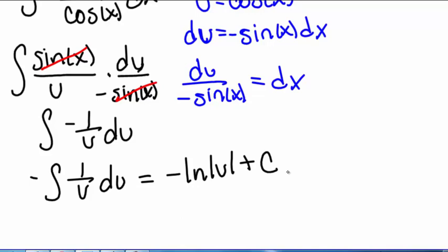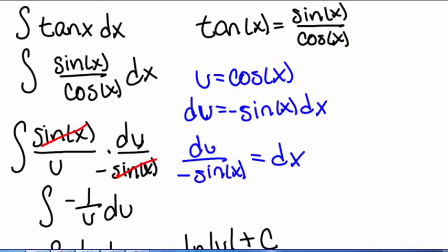And now we need to plug in our u, which was cosine of x. So we get negative natural log of cosine of x plus c is the integral of tangent of x.